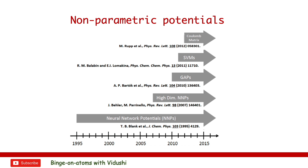Starting in 2007, several approaches based on high-dimensional neural networks and convolutional neural networks have become available, which are applicable to thousands of atoms. These methods are still evolving as there are still several requirements that have not been met by these potentials yet.